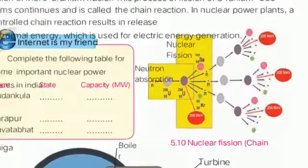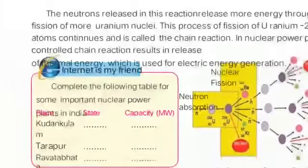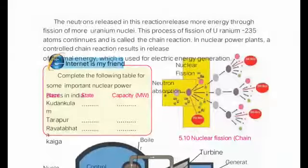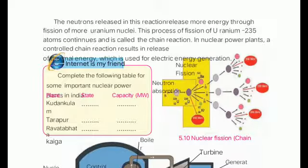Once more I am going to repeat nuclear fission. First of all, neutrons are bombarded in the nuclear fission chamber, which contains uranium-235 molecules. As neutrons are released and put into the chamber, the uranium-235 will absorb a neutron and get converted into uranium-236.